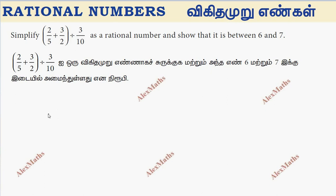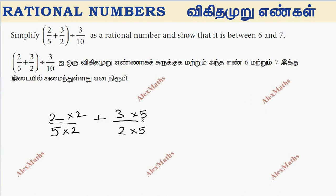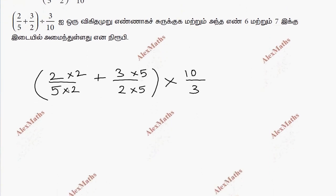The LCM is 10, so 2 by 5 is 10, into 2, into 2, plus 3 by 2, this is into 5 and into 5. This is the common denominator — this is the full bracket. In the division we have multiplication, we have 10 by 3, so 3 by 10 is 10 by 3.